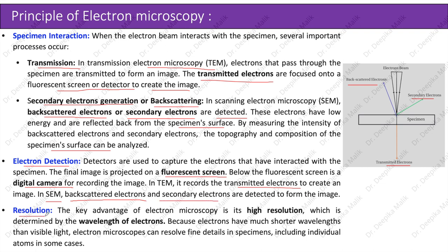Resolution: the key advantage of electron microscopy is its high resolution, which is determined by the wavelength of electrons. Because electrons have much shorter wavelengths than visible light, electron microscopes can resolve fine details in specimens, including individual atoms in some cases.